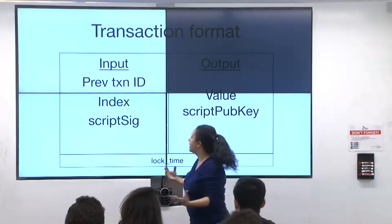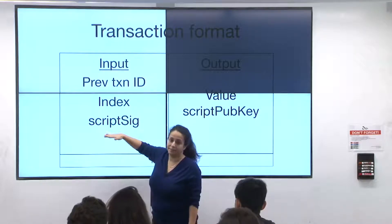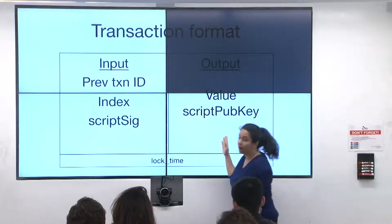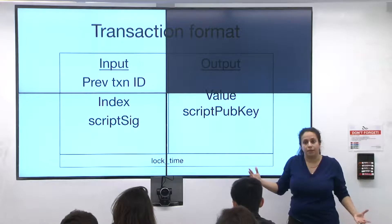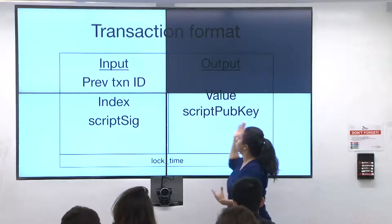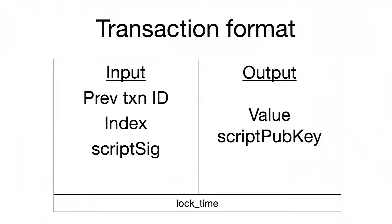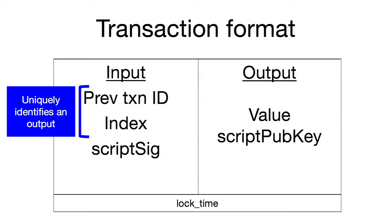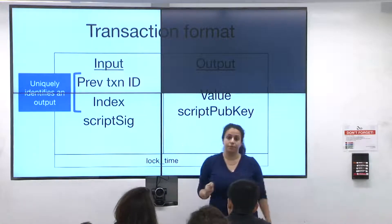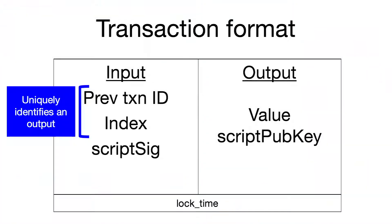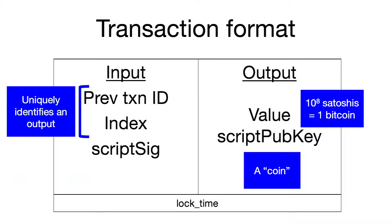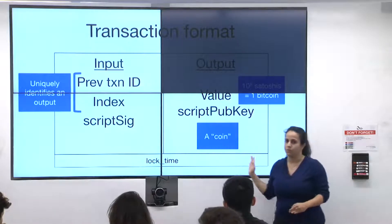You could spend 12.5 coins and create many different outputs of many different amounts, sending them to different people. The format is: an input pointing back to a previous transaction's output you intend to spend, and the way you spend it is by producing a new output. The output has a value specified in Satoshis — there are 10^8 Satoshis in one Bitcoin, so the value is always an integer. An output is what I'm referring to when I say the word coin.